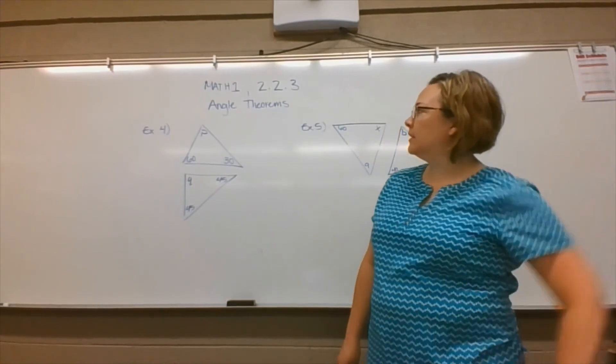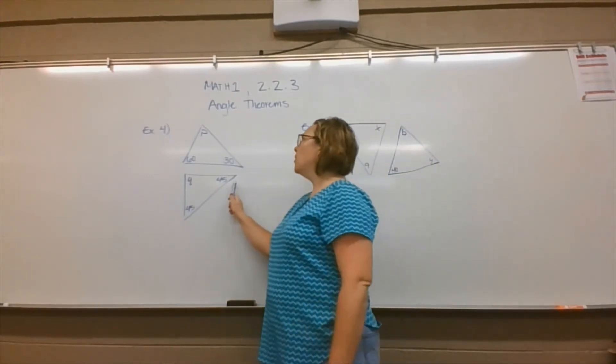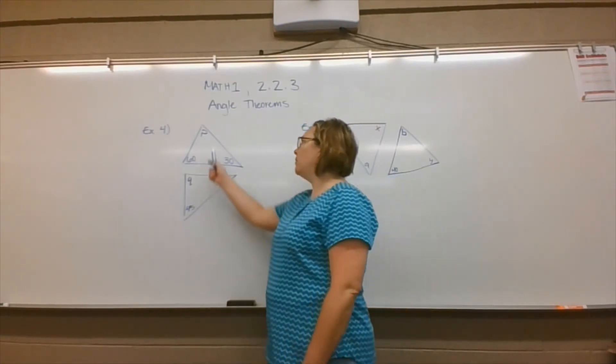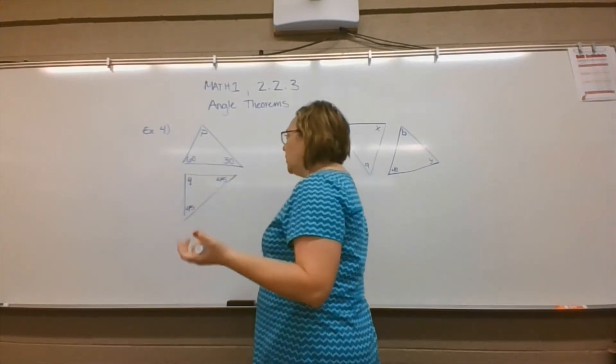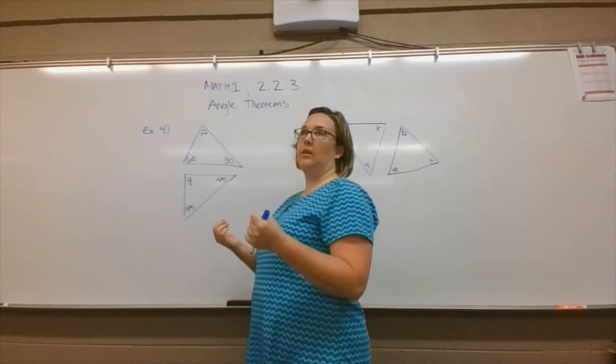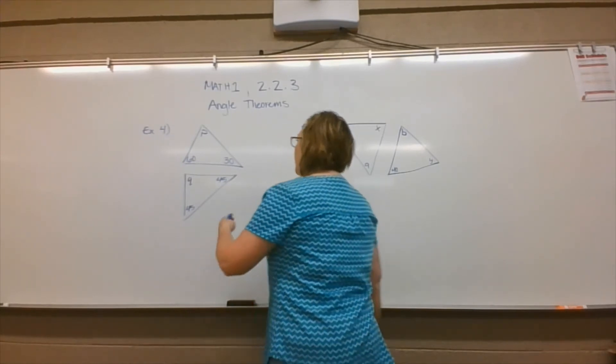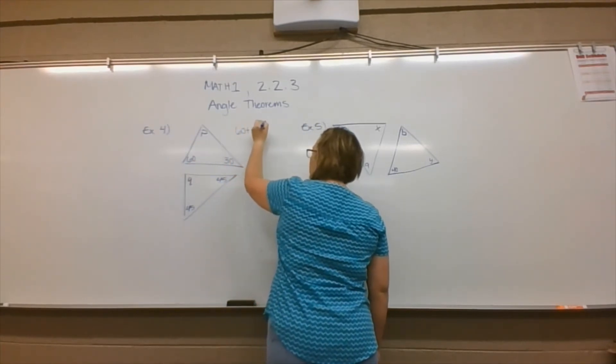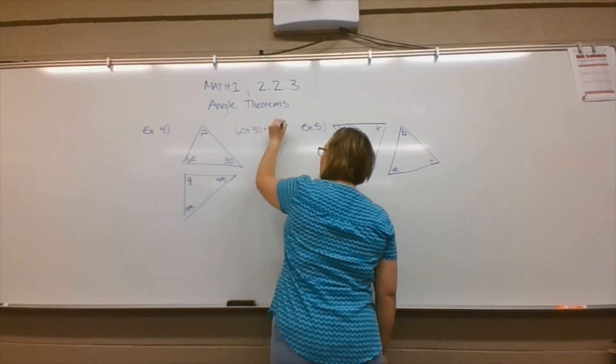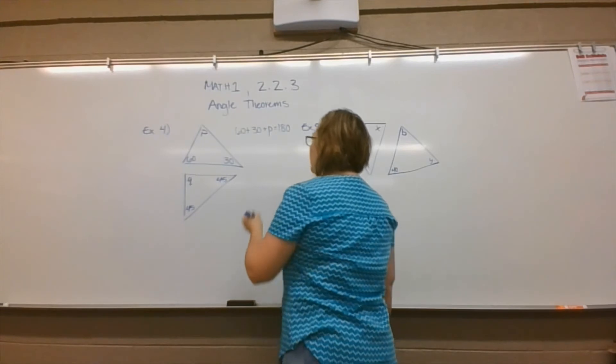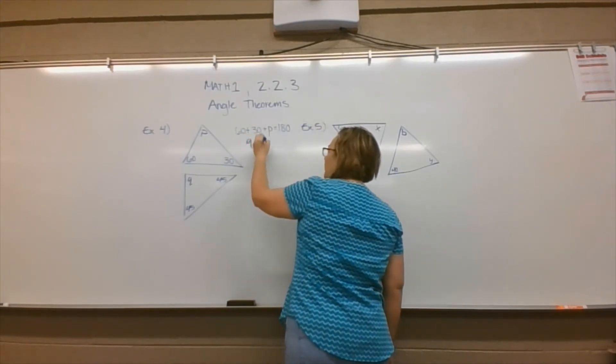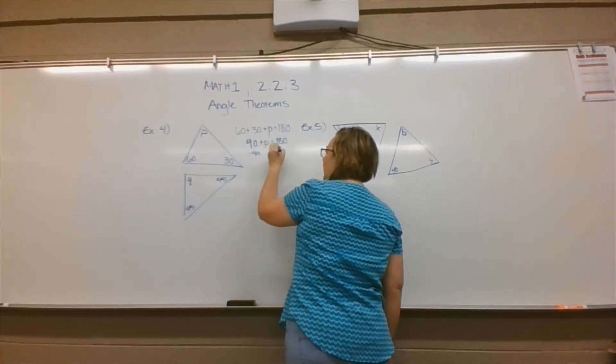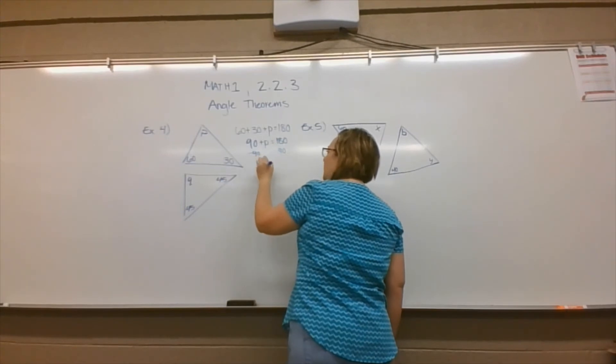Here are a couple other examples. You might be given two triangles where you have the third angle of each triangle missing and asked to determine what you can say about p and q. So it's important then to actually find out what is p equal to and what is q equal to. I'm going to add 60 plus 30 plus p and set it equal to 180. 60 plus 30 is 90. Subtract 90 from both sides, and p equals 90.